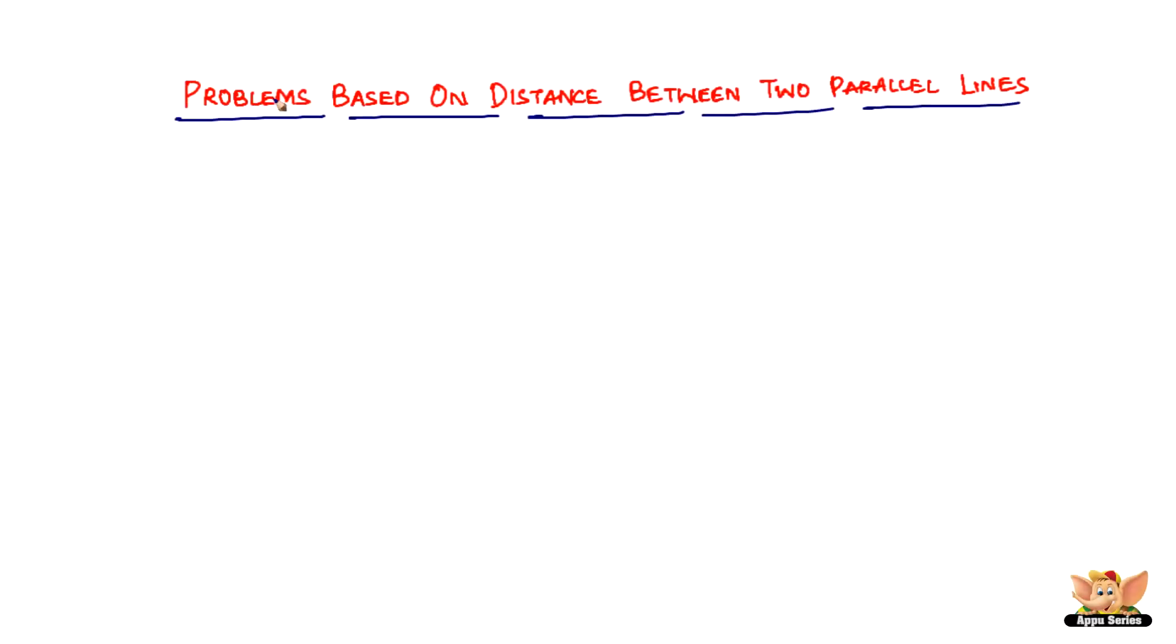In this video, let us solve problems based on distance between two parallel lines. Find the distance between parallel lines 3x minus 4y plus 9 equal to 0 and 6x minus 8y minus 15 equal to 0.